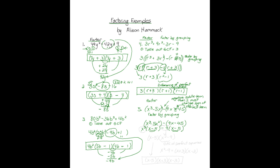Both groups match, so x minus five becomes one of my factors. The things that are left — x squared and negative nine — become my second factor, x squared minus nine. But x squared minus nine is the difference of perfect squares, so this factors into x plus three times x minus three. Rewriting the full problem: x minus five times x plus three times x minus three. And that is my solution.